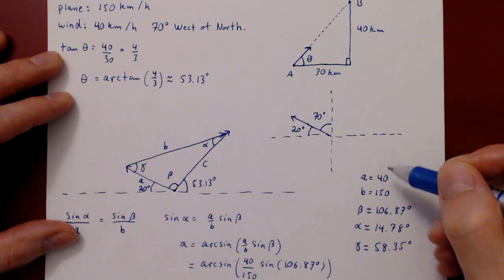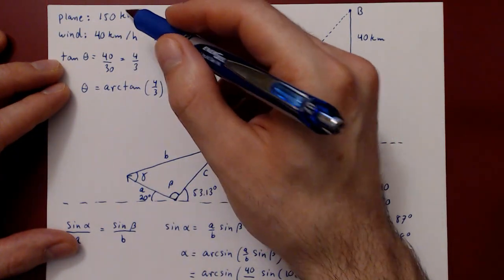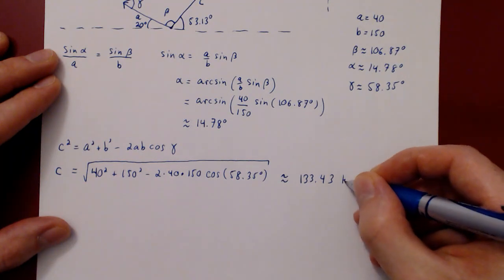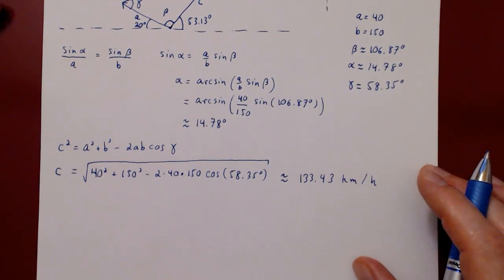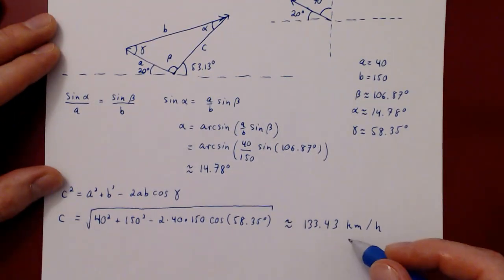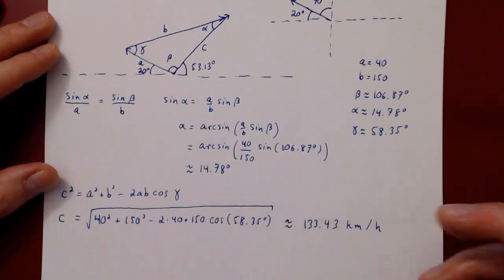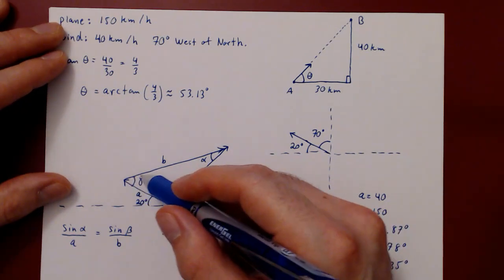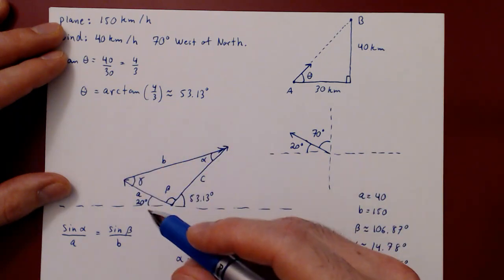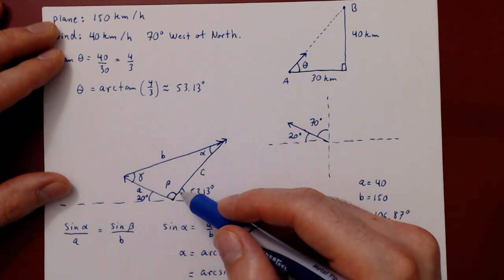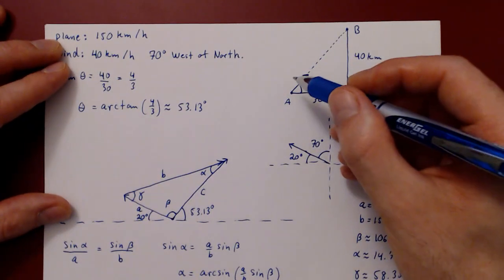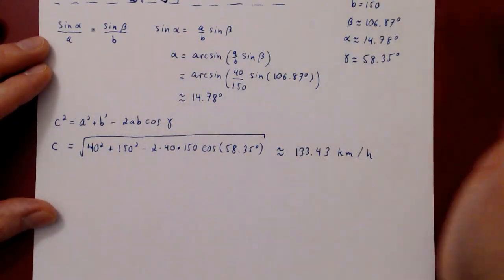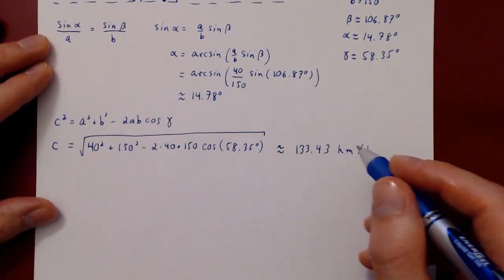Side a was the wind speed (40 km/h), side b was the plane's speed (150 km/h), so side c has the same units: kilometers per hour. The net result of the wind vector plus the plane's velocity vector gives a velocity vector pointing perfectly from A to B, and the net speed at which the plane will be traveling is approximately 133.43 kilometers per hour.